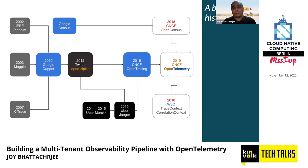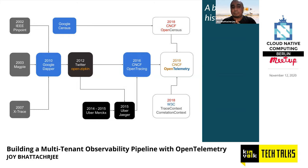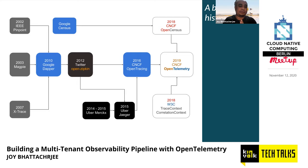Everyone talks about the Google Dapper paper as the source, but what people don't talk about is that the Dapper paper was itself an assimilation of three prior papers: the IEEE Pinpoint paper, the 2003 Magpie paper, and the 2007 X-Trace paper. Google borrows and reconciles a lot of competing concepts from those three papers to arrive at what we know as the Google Dapper paper, which is central to the observability ecosystem.